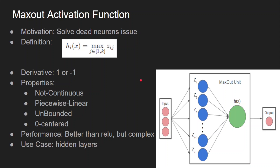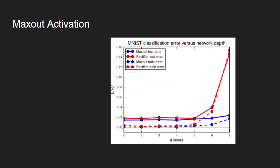Maxout is clearly not bounded — the output can have any value between minus infinity and plus infinity. It is a zero-centred function because it can have negative values. It performs much better than ReLU. However, the problem is its complexity: the number of parameters gets doubled compared to ReLU. If we have n neurons in a layer, the number of parameters will be at least 2n. A detailed video is shared in the description. Maxout can be used only for hidden layers.